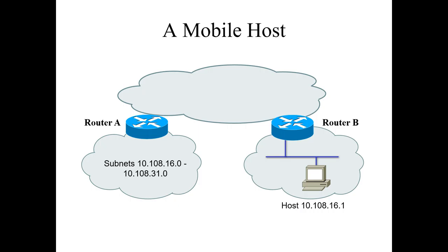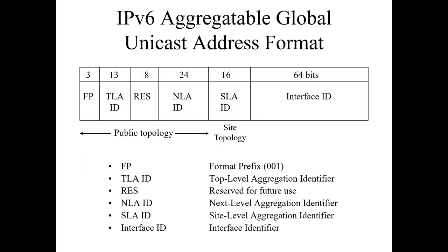Let's talk about IPv6 for a minute, specifically the global unicast addressing format. We have a simple unicast address format header — our FP format prefix, our top-level aggregate identifier (TLA ID), reserved for future use (res), our NLA ID (next level aggregation identifier), our site-level aggregator identifier, and then our interface ID. This is the simplified unicast address format — I don't really know why it's brought up here, because we don't really talk about header formatting just yet.